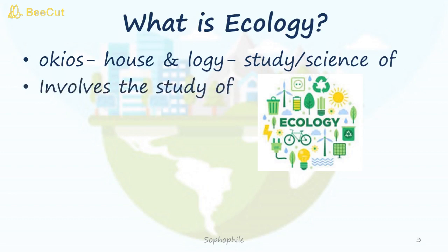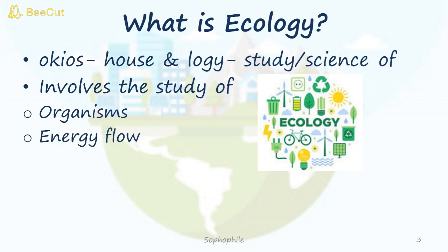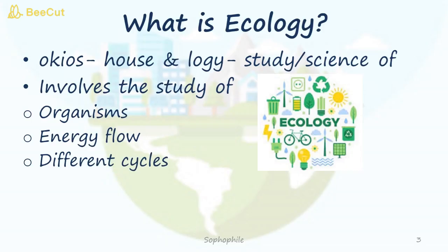Ecology also involves the study of organisms — that is, interactions or interrelations between organisms of either the same species or different species. Then the energy flow and different cycles. So ecology also studies different cycles: the nitrogen cycle, phosphorus cycle, sulfur cycle, and oxygen cycle, and how these cycles get affected due to biotic and abiotic factors in the environment.